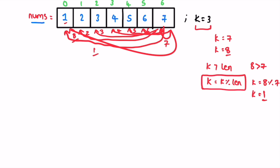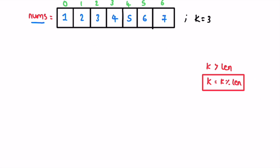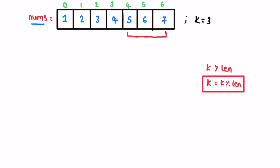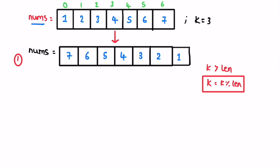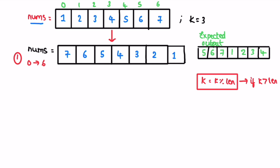This is a three-step process. In the first step, you reverse all elements from start to end. After reversing, the nums array will look like the reversed version. Note that we are rotating the input array itself — not creating a new array. The first reversal takes place between index 0 and the last index 6. You'll notice some similarity between our first reversed array and the expected output — part of it is already matching.